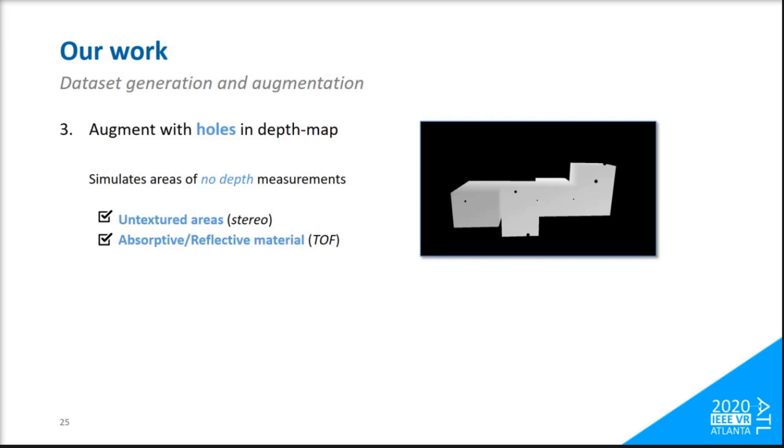Given that we need to deploy our model in real-world acquired noisy depth input, we first augment these depth maps with random holes, which are present in both stereo and time-of-flight sensors, due to untextured areas and absorptive or reflective materials respectively. To add an extra layer of realism in our data, we also augment these depth maps with two types of noise: one modeled for stereo cameras, and one for time-of-flight depth sensors.